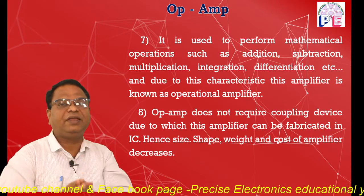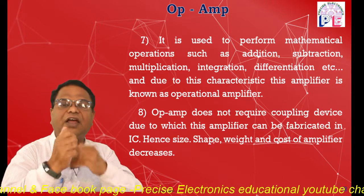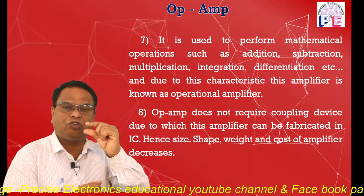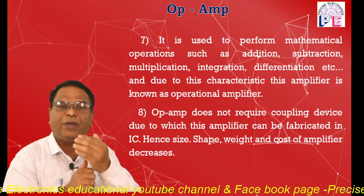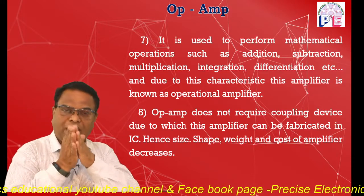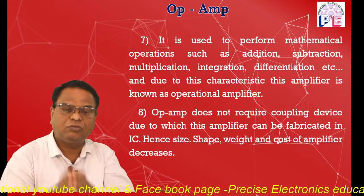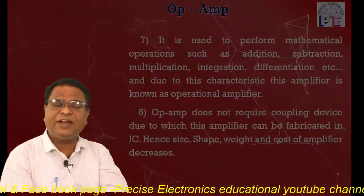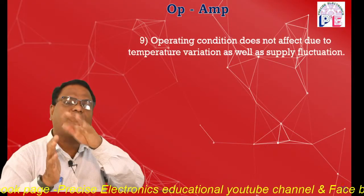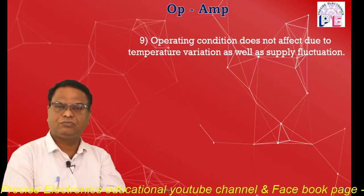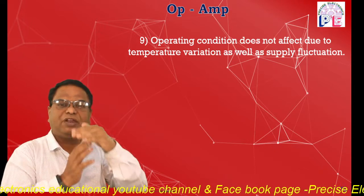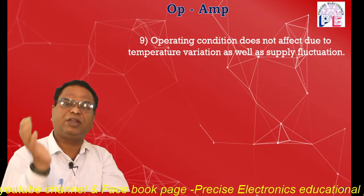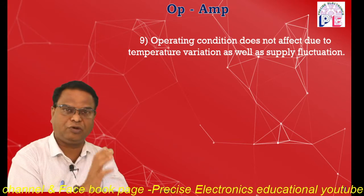In the operational amplifier, coupling devices are not used, so this amplifier can be easily fabricated in IC form. Due to IC fabrication, the size, weight, and cost of the amplifier are reduced. Next, the operating condition of this amplifier is not affected by temperature variation or supply variation — the output potential will mostly depend on the input signal.